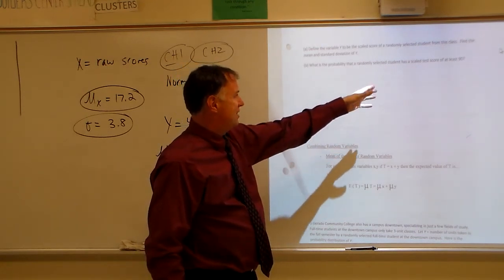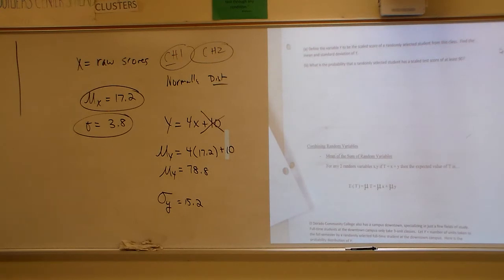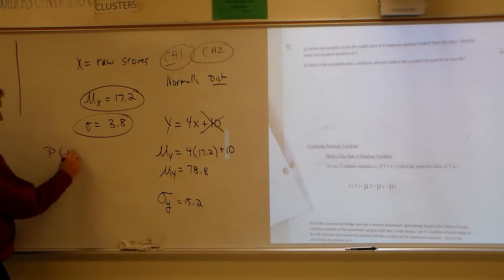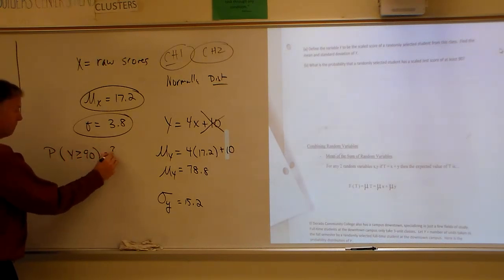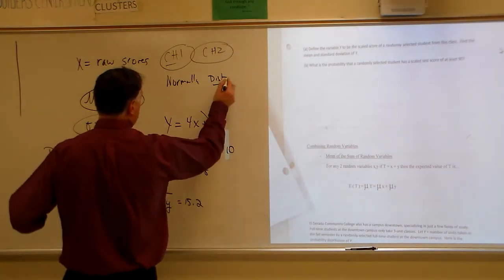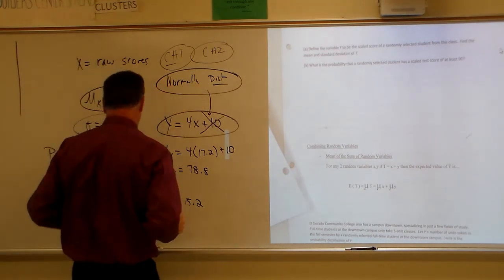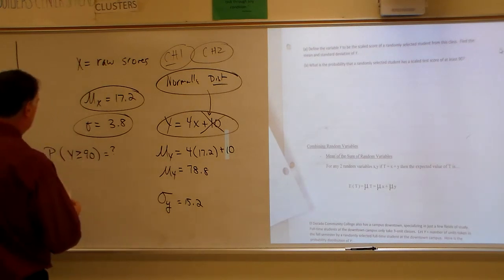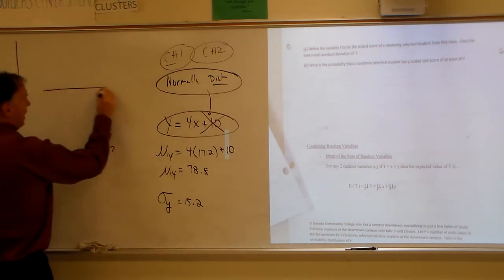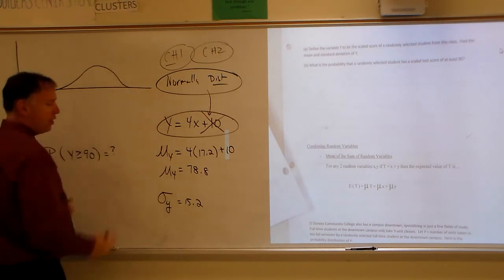What is the probability that a randomly selected student has a scaled test score of at least 90? So let me see what I want to use for letters for that. I think we're just going to keep calling it y. So I want to know what's the probability that y is greater than or equal to 90. Well, guess what? What do we know about the shape? The shape doesn't change. So if this is normally distributed, after we do this, after we do the transformation, it's still going to be normally distributed. So guess what we're going to do?